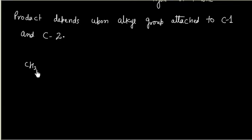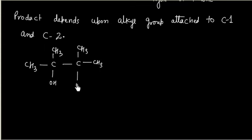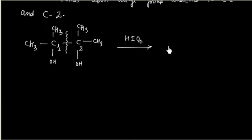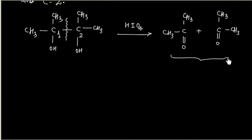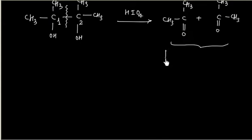For example, if we have a glycol where both carbons bear alkyl substituents, and this is treated with periodic acid, the bond between carbon 1 and carbon 2 will be cleaved, and we will get 2 ketones as products.